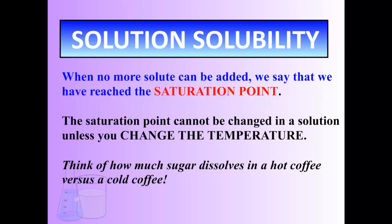The point at which no more solute can be added, we say that's the saturation point, and the only thing that can change a saturation point is usually by changing the temperature. You can add more water or more solvent, a bigger pot of coffee will dissolve more sugar. You can certainly do that, but changing the temperature is the most common way.